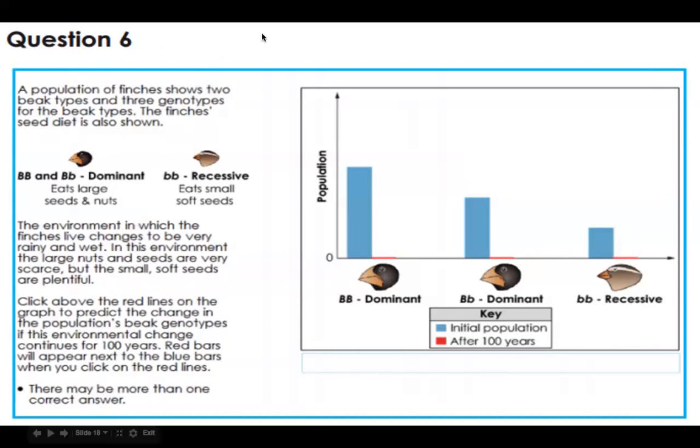Alright, question six. A population of finches shows two beak types and three genotypes for the beak types. The finches' seed diet is also shown.